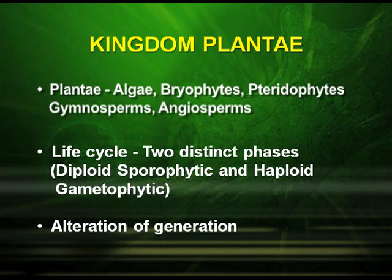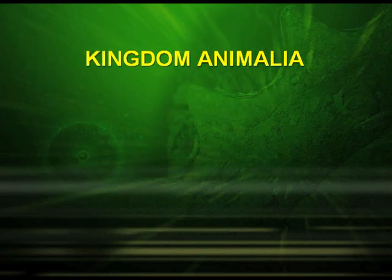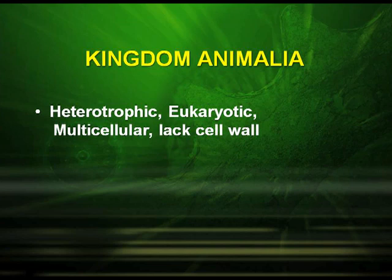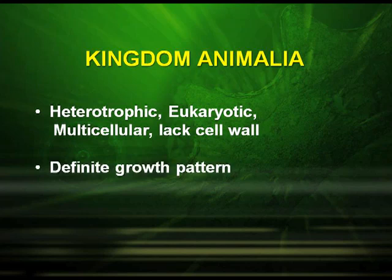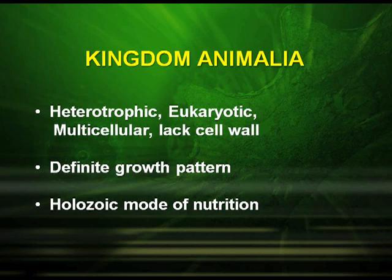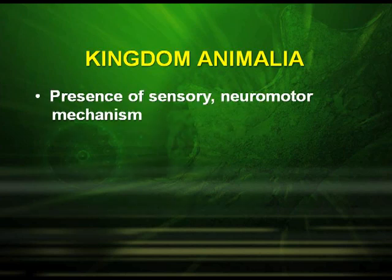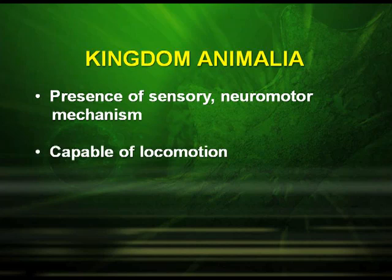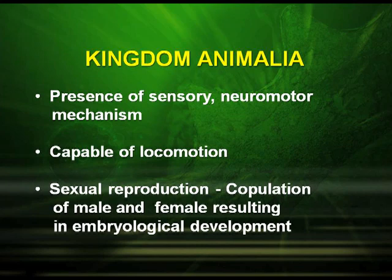Kingdom Animalia. They are heterotrophic, eukaryotic, multicellular organisms. They lack a cell wall and have a definite growth pattern, holozoic mode of nutrition, and the presence of a sensory neuromotor mechanism. They are capable of locomotion. Sexual reproduction is by the copulation of male and female, resulting in embryological development.